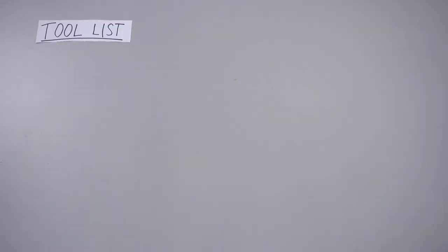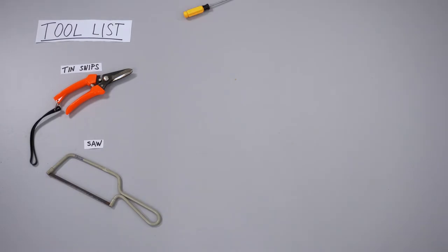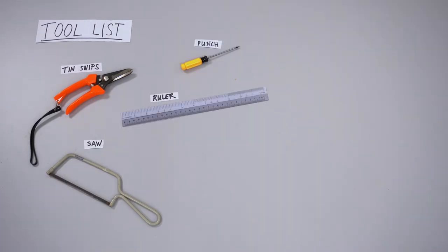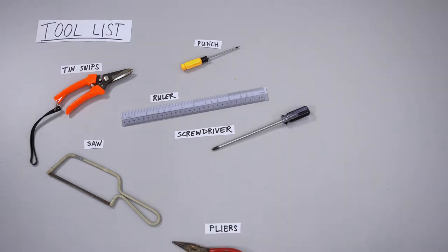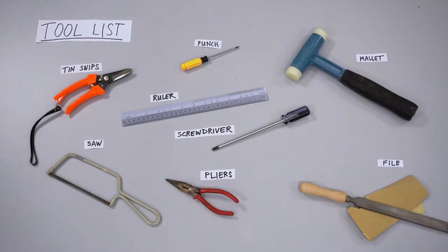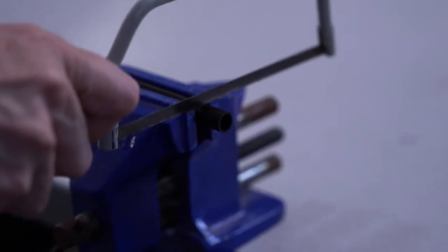In terms of tools, you'll need some tin snips to cut up the coffee can, a saw, a hole punch or small screwdriver, a ruler, a large screwdriver, pliers, a mallet, and either sandpaper or file. Let's go ahead and get started.